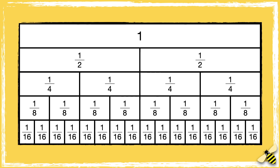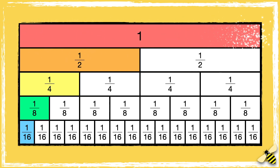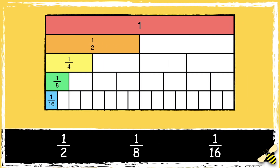Here is a fraction rule. Let's look at each unit fraction: 1 sixteenth, 1 eighth, 1 quarter, 1 half, and 1 whole. So we can clearly see each unit fraction now. We can see that 1 sixteenth is less than 1 eighth, and 1 half is greater than 1 eighth.